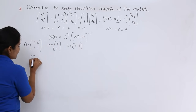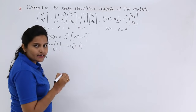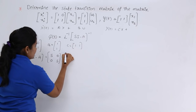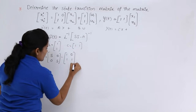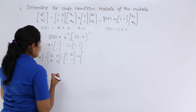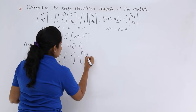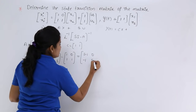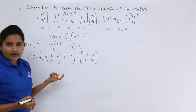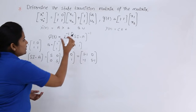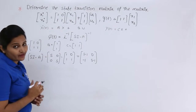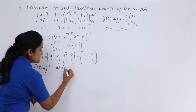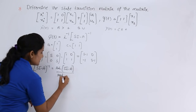Now we calculate sI - A. sI is s times the identity matrix [1, 0; 0, 1], giving [s, 0; 0, s]. Subtracting A = [1, 0; 1, 1] from sI gives: sI - A = [s-1, 0; -1, s-1]. To get (sI - A) inverse, we use the formula: adjoint of (sI - A) divided by the modulus (determinant) of (sI - A).